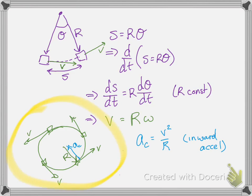Let's look at our object moving in a circle. It's always got a velocity pointing in the forward direction, tangential to the circle with a magnitude of r omega. It also has a component of acceleration pointing towards the center of the circle called the centripetal acceleration — the inward acceleration is v squared over r. If speed changes, the centripetal acceleration changes accordingly.